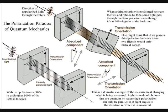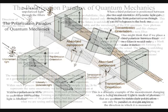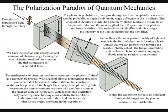Light is made of photons that are quantum by nature. Their polarization can only be parallel or at right angles to the direction in which it is measured. All the photons passing through the first polarizer are vertically polarized, but the polarization at 45 degrees is not defined until it is measured. Therefore half of them get through the middle polarizer. The photon is probabilistic - they pass through the filter completely or not at all, and the probabilities depend only on the angle difference of the two filters.